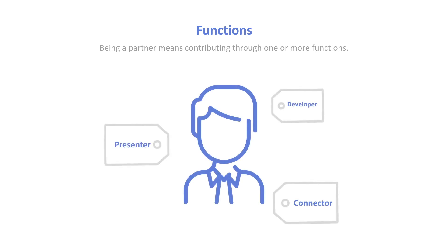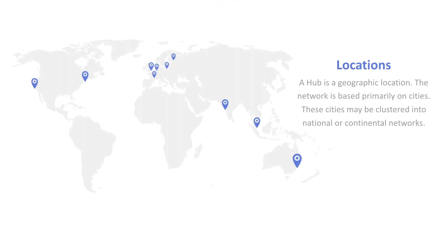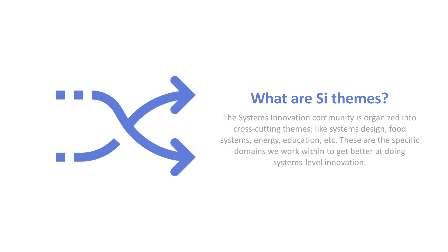A hub is a geographical location, and the network is based around cities primarily — not nations. But those cities can be clustered into national or continental networks, such as one for Europe, North America, or Southeast Asia, since certain cultures and regions naturally form clusters. There are also themes: the systems innovation community is organized into cross-cutting themes like systems design, food systems, energy, education, and so on. These are specific domains we work within to get better at doing systems-level innovation.